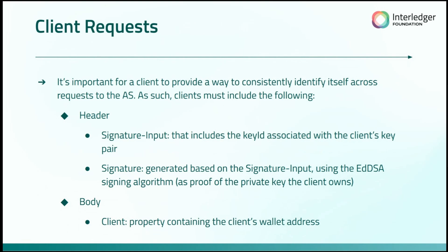When clients send requests to either the authorization server or the resource server, they send these HTTP requests with a header component and a body component. Because we're using REST, clients make several of these requests, and it's important they have a consistent way to identify themselves. Clients must include in their header all the input required to make the secure signature — including the key ID associated with the client's key pair — plus the signature itself. In their body, they can also include a client property containing their wallet address. When making a request to the resource server, they would also have an authorization header — the GNAP token header — which contains the access token.